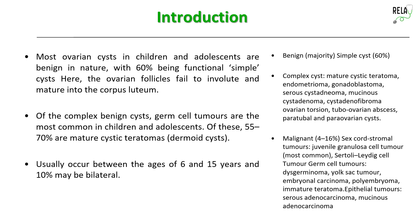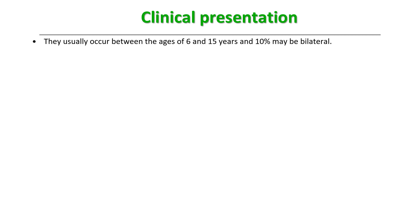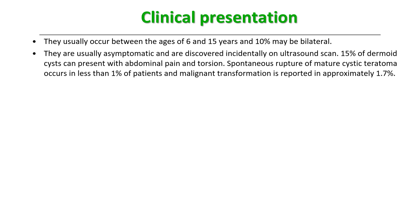Specific malignant types include Sertoli-Leydig cell tumors, germ cell tumors such as dysgerminoma, yolk sac tumors, embryonal carcinoma, and polyembryoma. These occur between the ages of 10 and 15 years and 10% may be bilateral. They are usually asymptomatic and discovered incidentally on ultrasound. Ovarian cysts generally do not present with severe complaints unless they grow significantly or develop complications like torsion or hemorrhage. 15% of dermoids can present with abdominal pain and torsion; spontaneous rupture occurs in less than 1%, and malignant transformation in approximately 1 to 2% of patients.